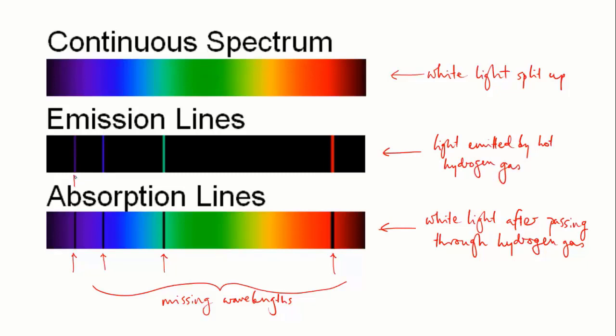This spectrum, the reverse of the absorption spectrum, is called the emission spectrum because the hydrogen atoms are emitting the light.